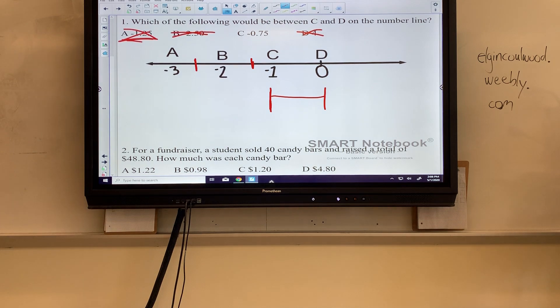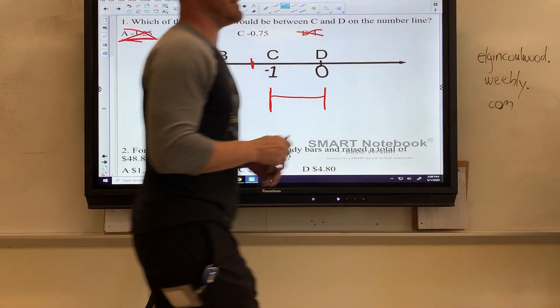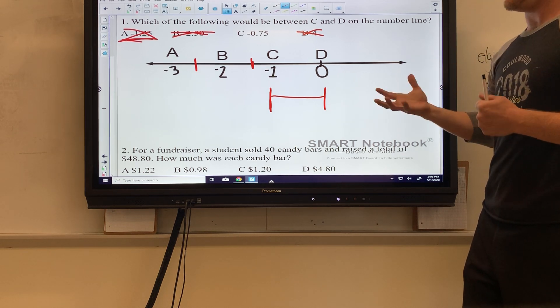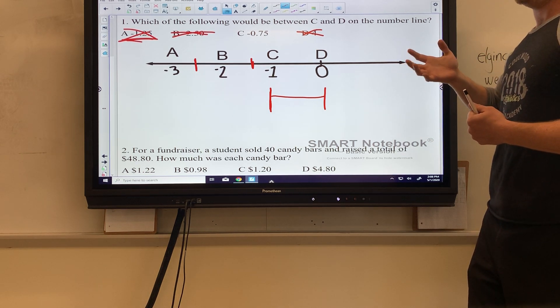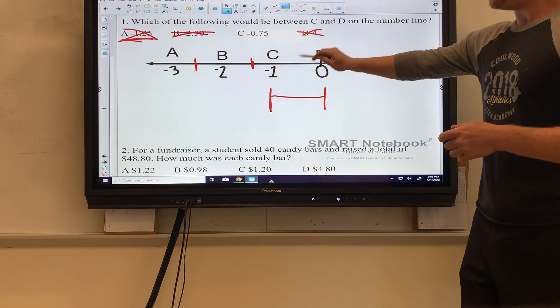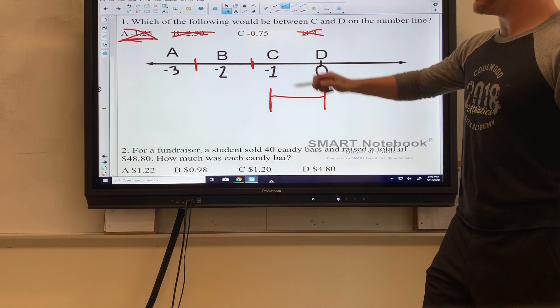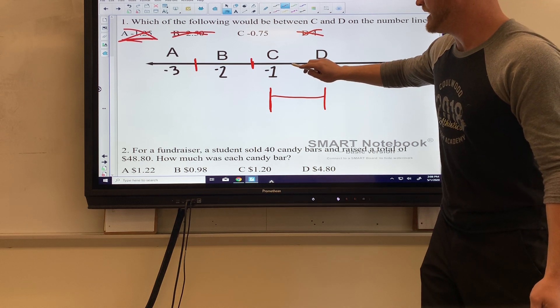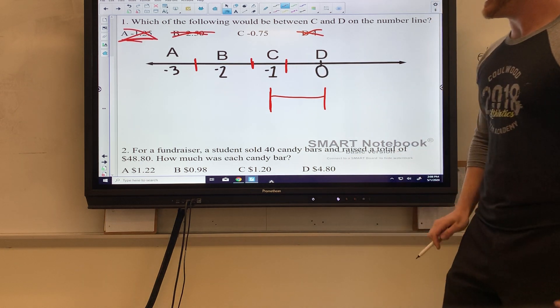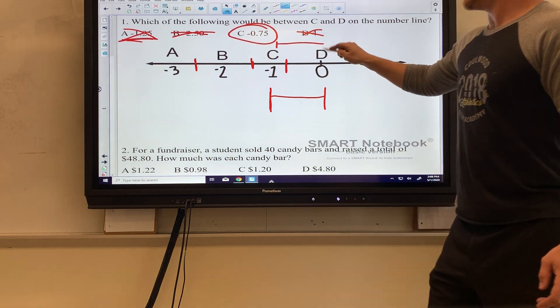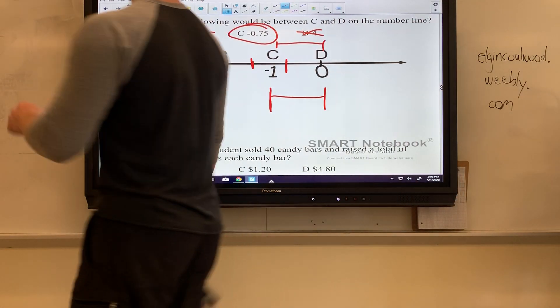C, however, 0.75—if we're thinking about positive numbers, 75 cents would be a little less than $1 but a little more than zero. So negative 0.75 is between 0 and negative 1, kind of closer to the negative 1 side. That means answer choice C would be between C and D. Hopefully you got C for number one.